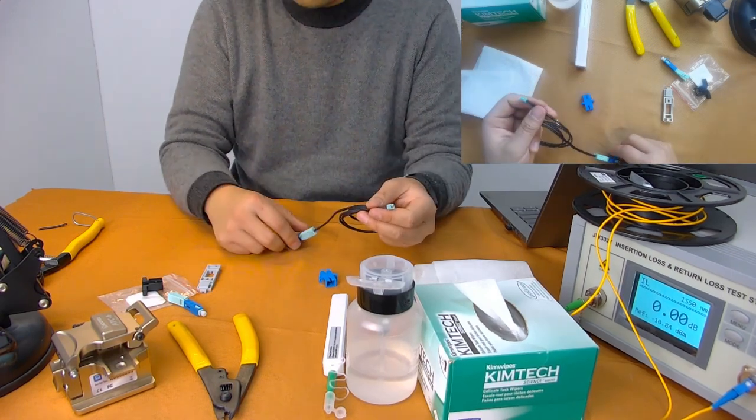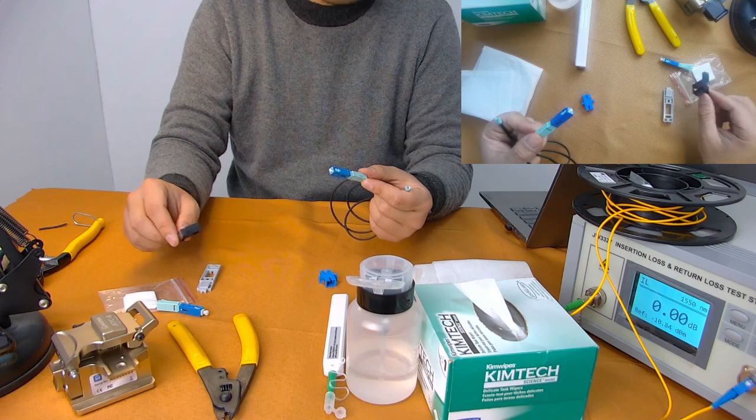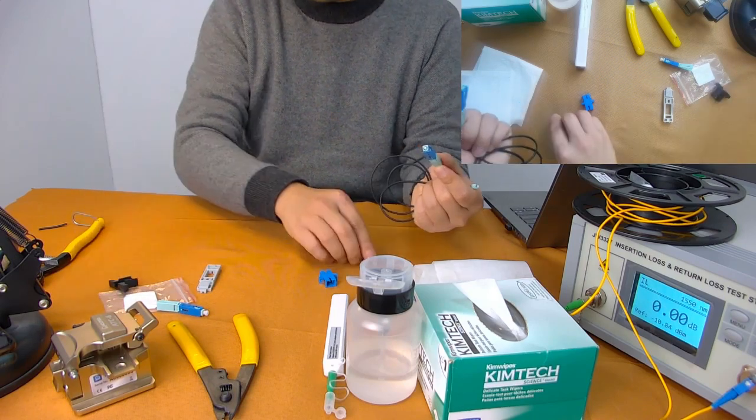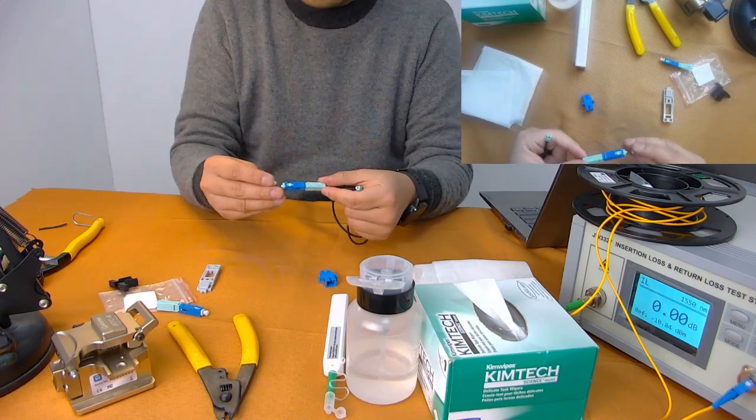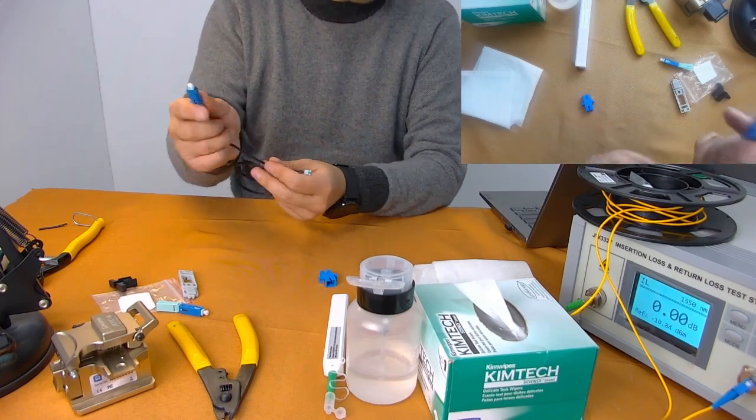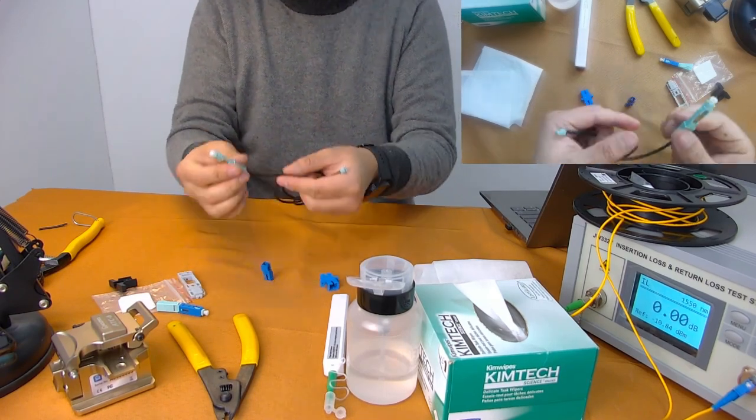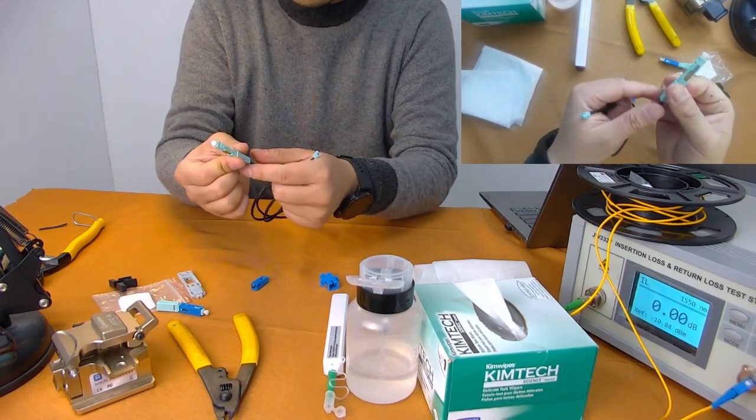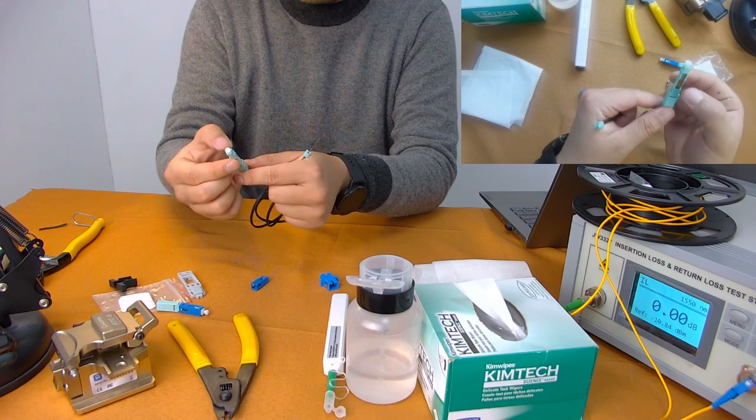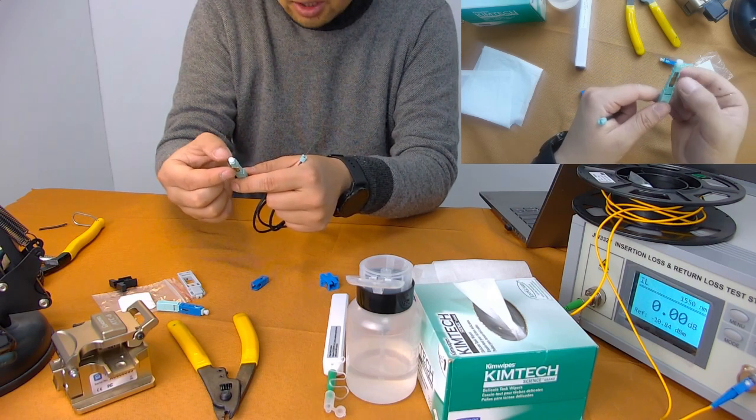But of course, some customers said I didn't have these things because I forgot or lost them in the first installation. So all you need is a dust cap. With a dust cap, press it, then you can remove it easily. Put the v-groove in the down position.